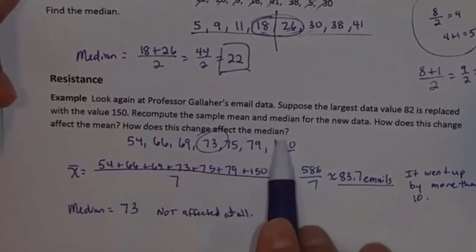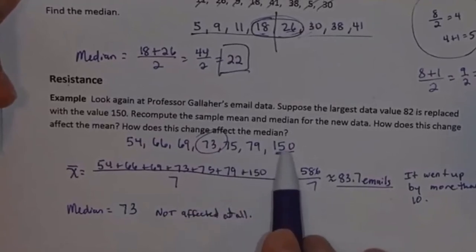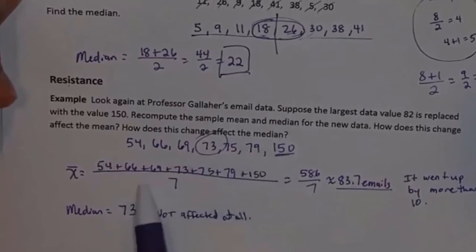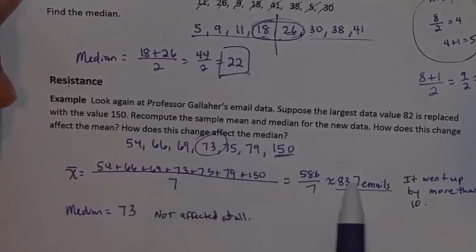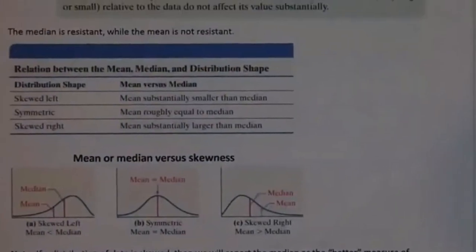The median was resistant to being affected by that extreme value. But the mean is not resistant to extreme values — changing that one value to an extreme value made the mean jump from 71 to 83. So the mean is not resistant. As we go through this class, we're going to have different statistical calculations, some resistant and some not, and we have to know whether our calculation will be affected substantially by extreme values.